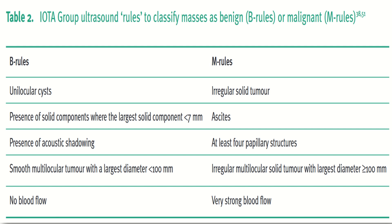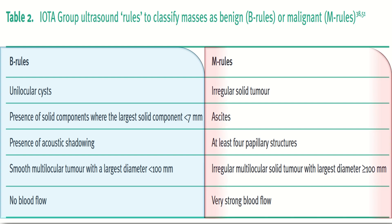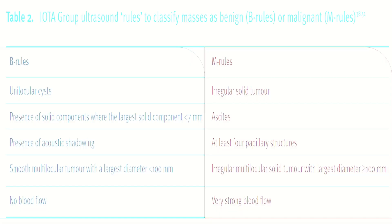The IOTA group ultrasound rules classify masses as benign (B-rule) or malignant (M-rule). B-rule features include: unilocular cysts, solid components where the largest is less than 7 mm, acoustic shadowing, smooth multilocular tumor with largest diameter less than 100 mm, and no blood flow. M-rule features include: irregular solid tumor, ascites, at least four papillary structures, irregular multilocular solid tumor with largest diameter more than 100 mm, and very strong blood flow.